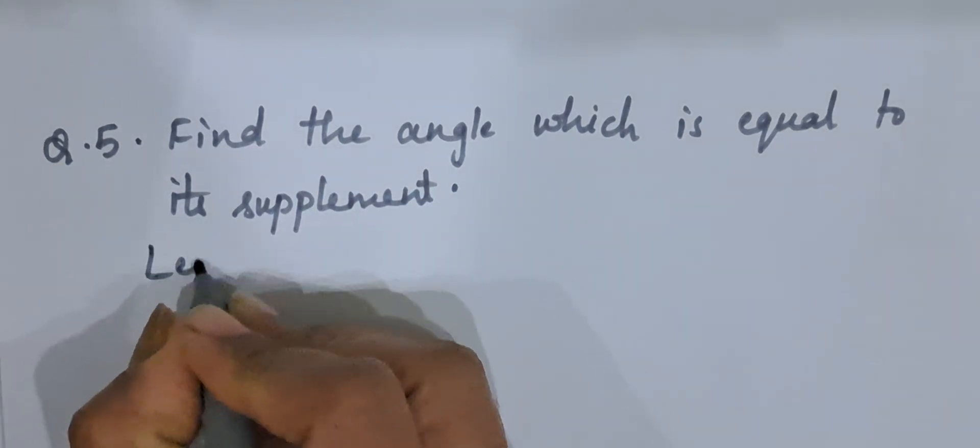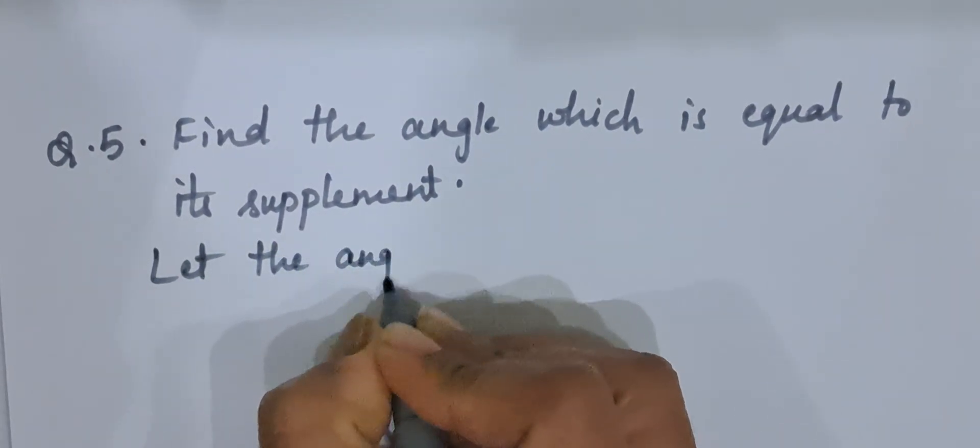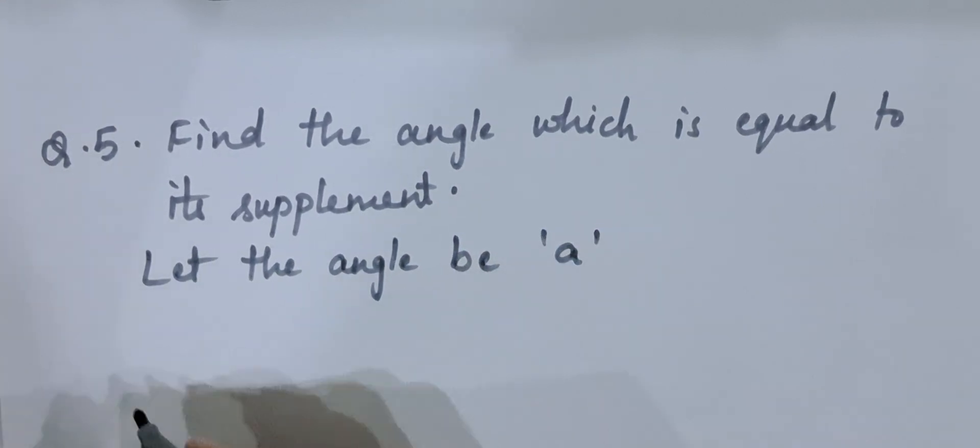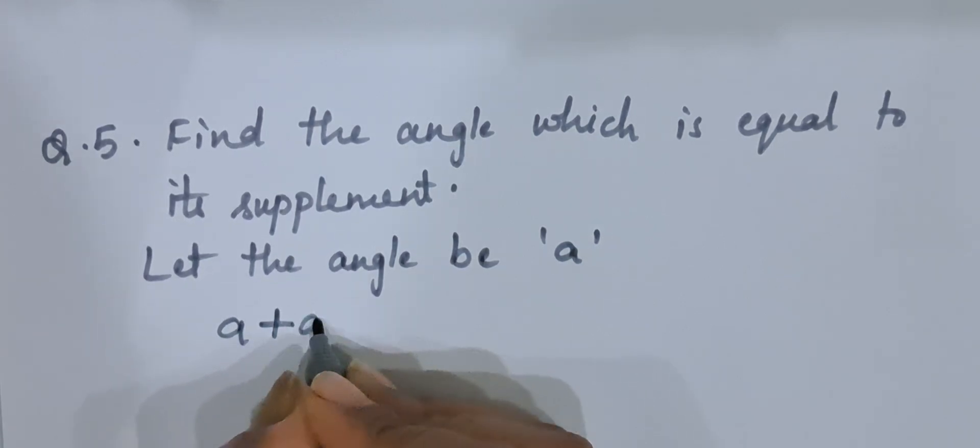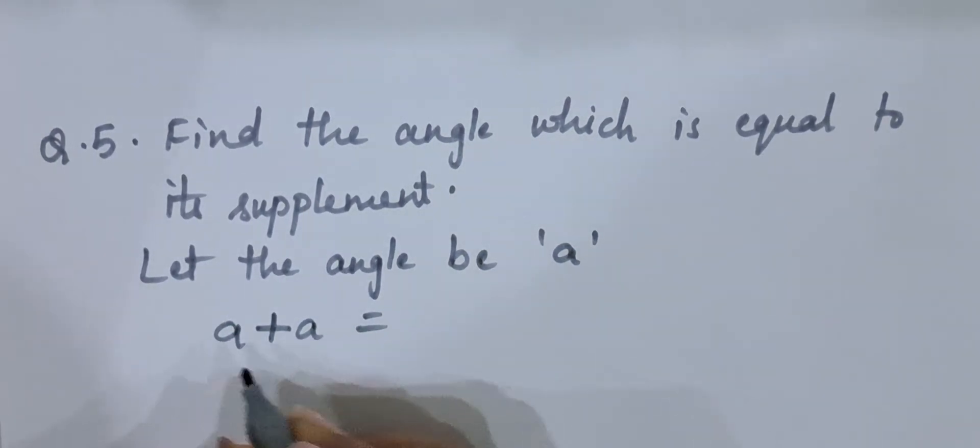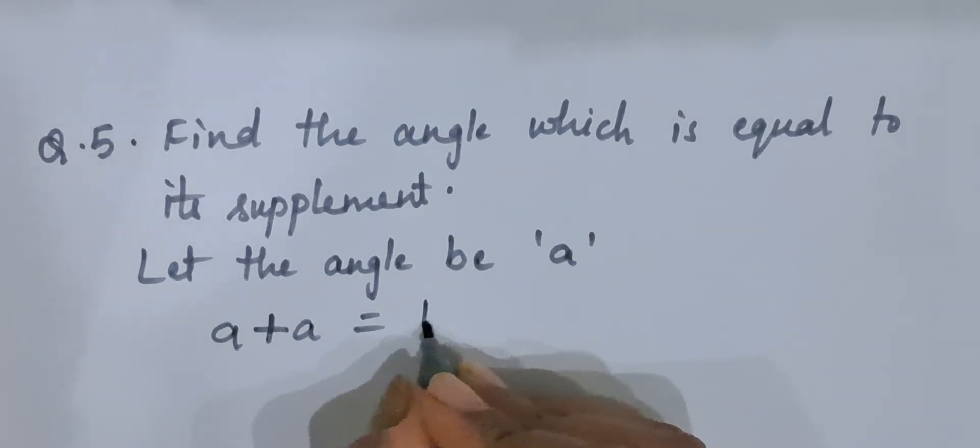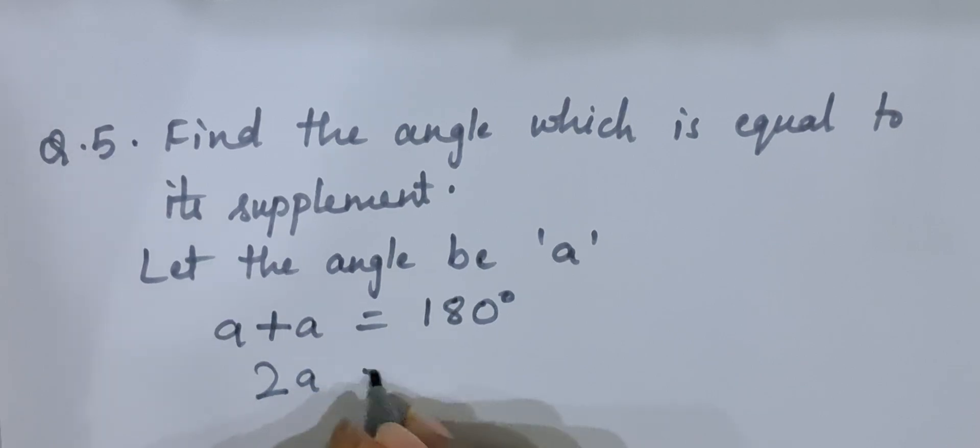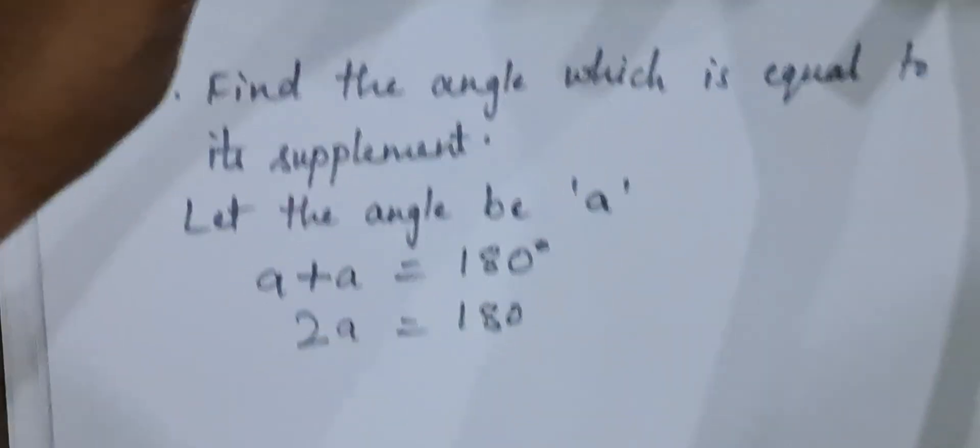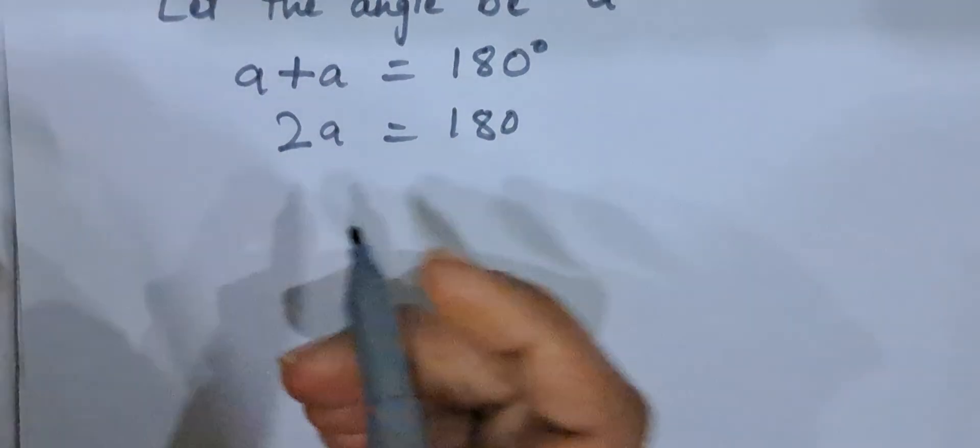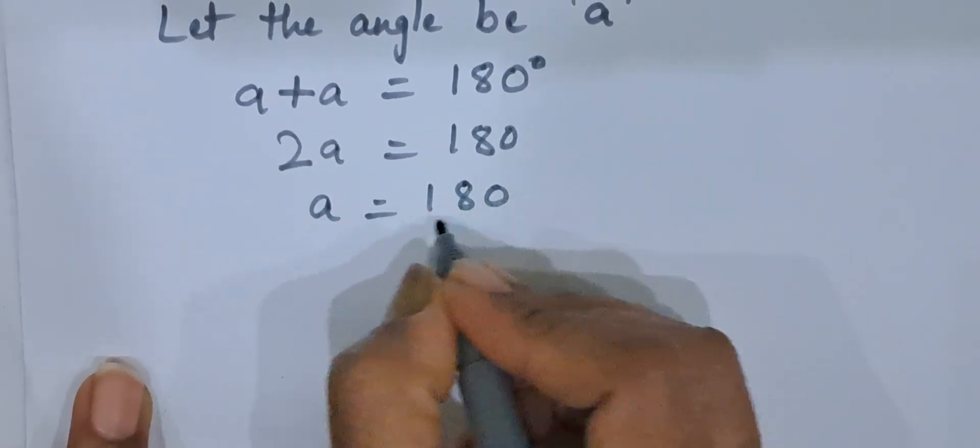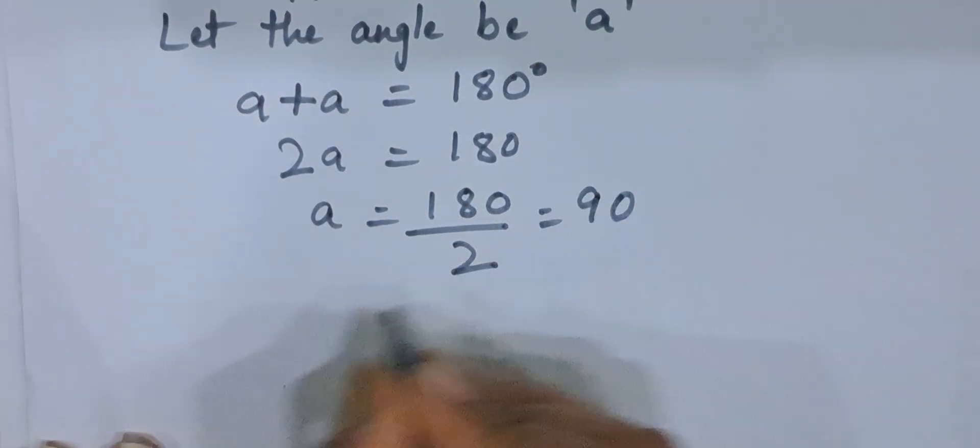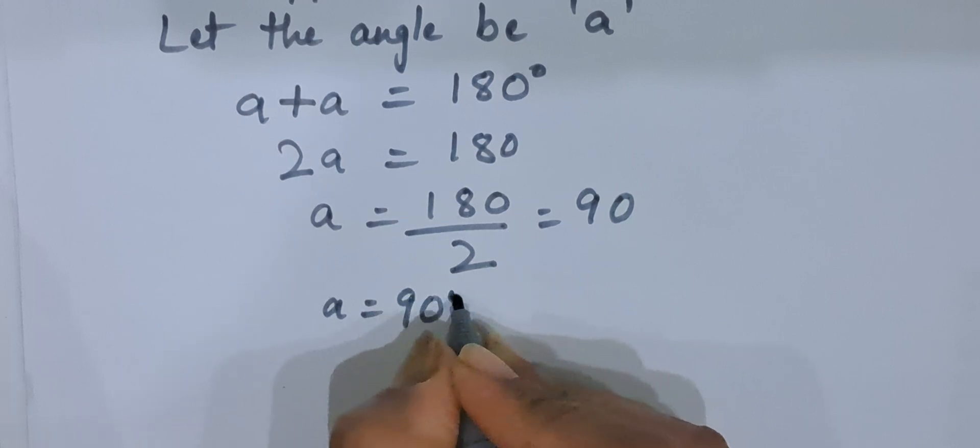Now we will take let the angle be A. Now A plus A, that means they both are equal, right? So A plus A is 180 degrees. So 2A is 180 degrees. So 2A is 180, so what will be A? A will be 180 divided by 2. That will be 90. So we got the angle as 90 degrees.